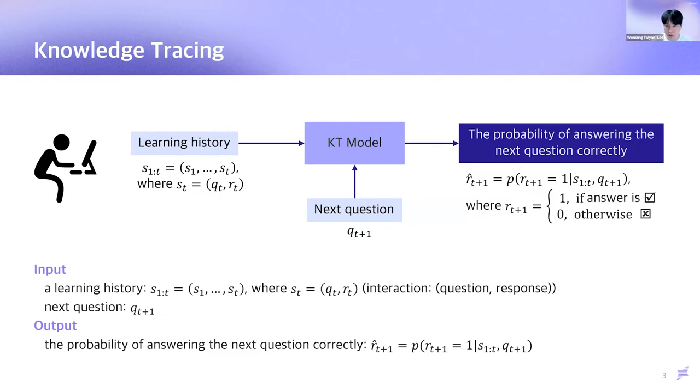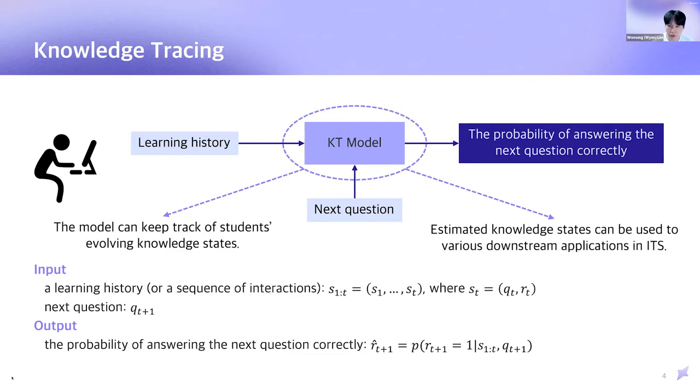Let me describe the knowledge tracing task more formally. As shown in the diagram, knowledge tracing model receives the learning history of time step t and the next question, qt plus 1, as inputs. And the model predicts the probability that the student will answer the next question correctly. So the inputs are s1 to t here, and the next question qt plus 1, where each st, which is an interaction, consists of question and response at time step t. So the output of the knowledge tracing model is the probability of getting the next question correctly, which is r hat t plus 1. Through this formulation,